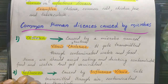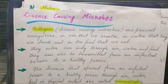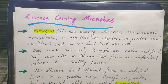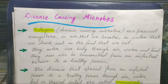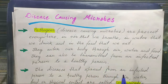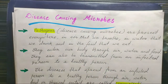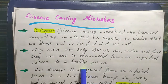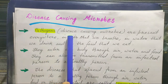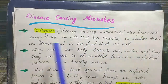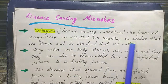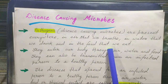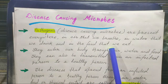Some microbes are very helpful, but on the other hand, some microbes are dangerous and harmful to us. Harmful microbes are called disease-causing microbes, or pathogens. Pathogens are present everywhere — in the air we breathe, in the water we drink, and in the food we eat.